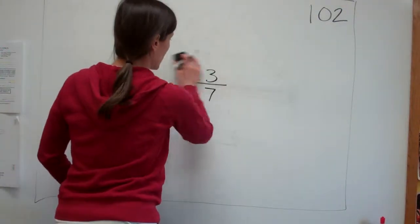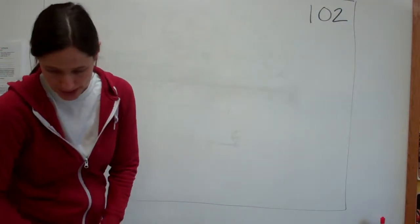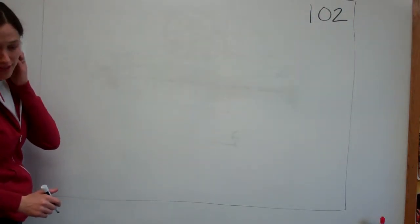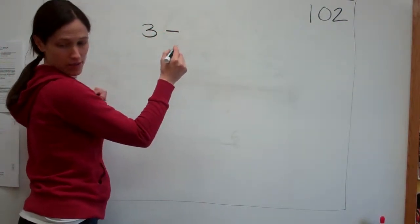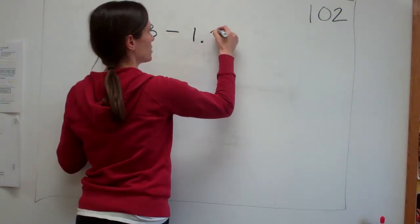Has everybody got it? Everybody understands that the zero is absolutely necessary in this one. Try this one. 3 minus 1.23.